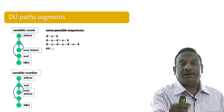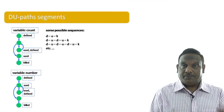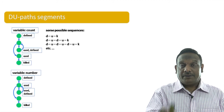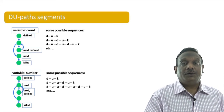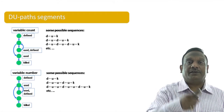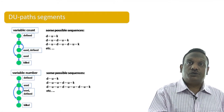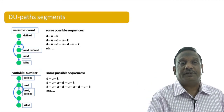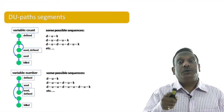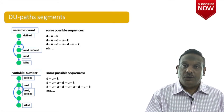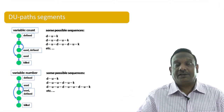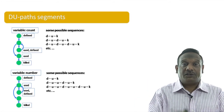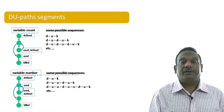For the variable 'number': when not entering the loop, the sequence is defined, used, killed. If entering the loop once: defined, used, used, defined, used, killed. If entering the loop twice: defined, used, used, defined, used, used, used, defined, used, killed. We have to analyze these DU path segments for each variable with the execution cycle in mind.